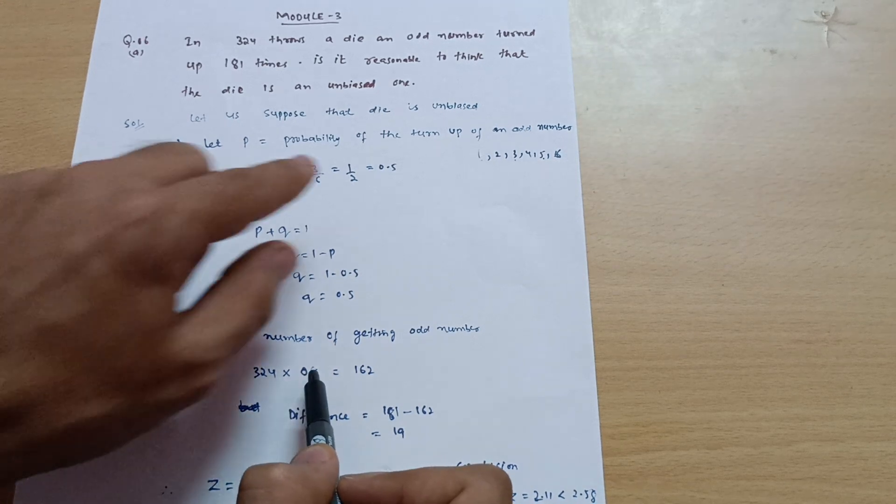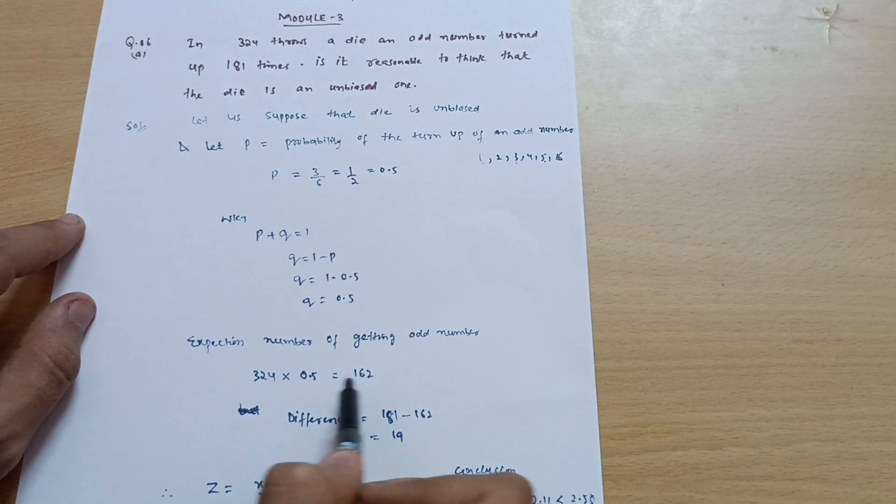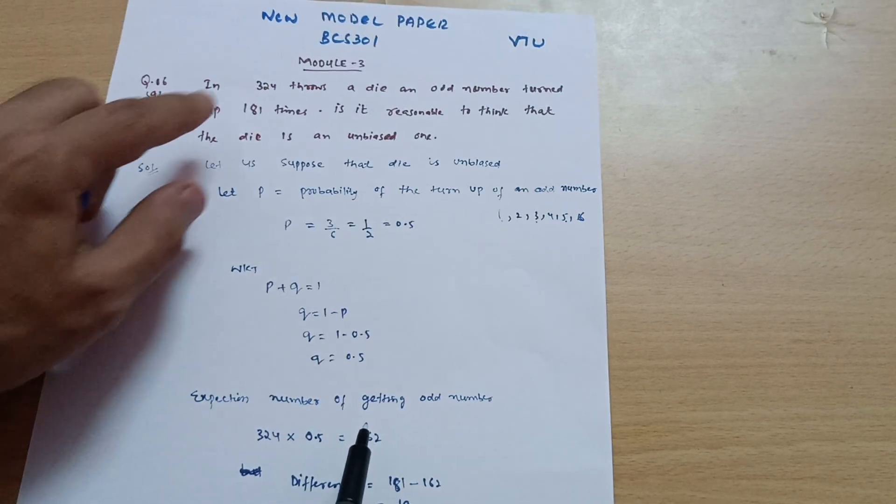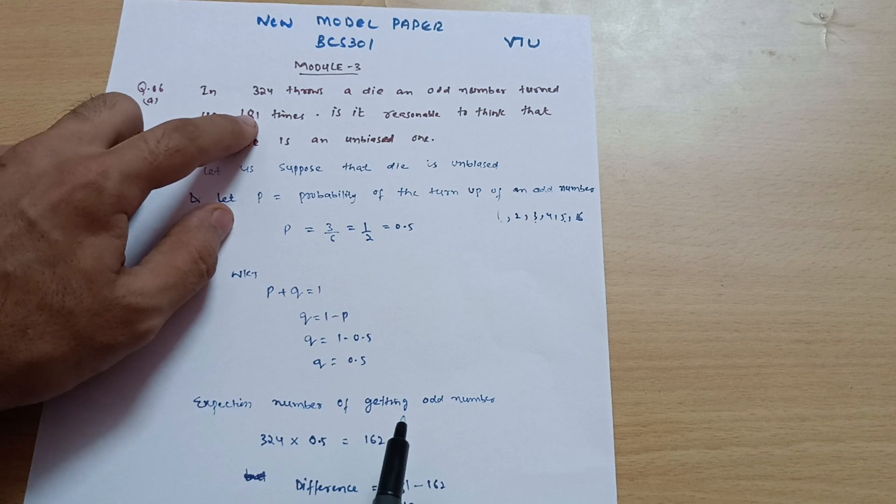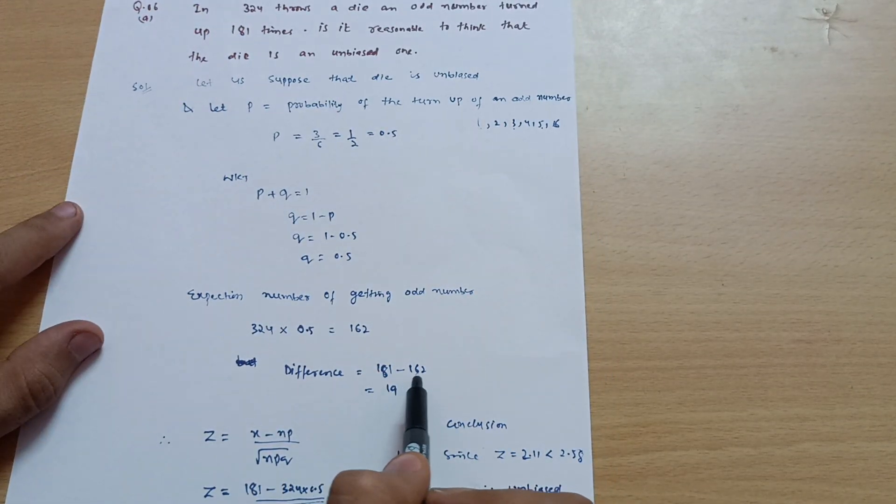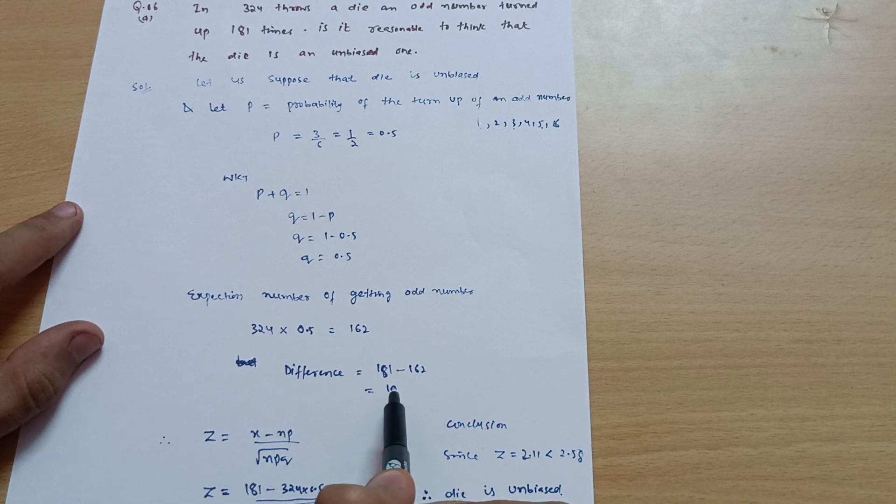You will get 162 as expected number. But in the question it is mentioned as 181, so the difference is how much? 181 minus 162, that is 19 is the difference in this particular data.